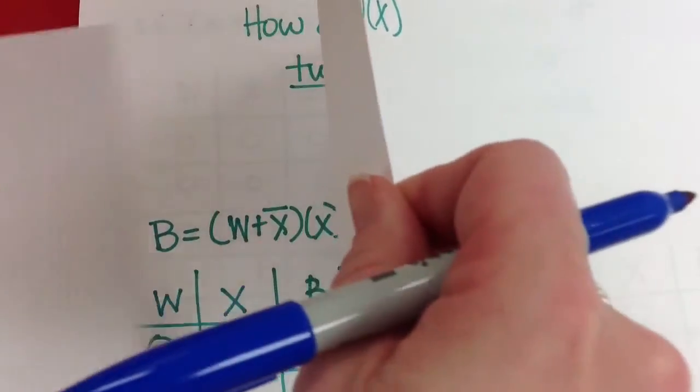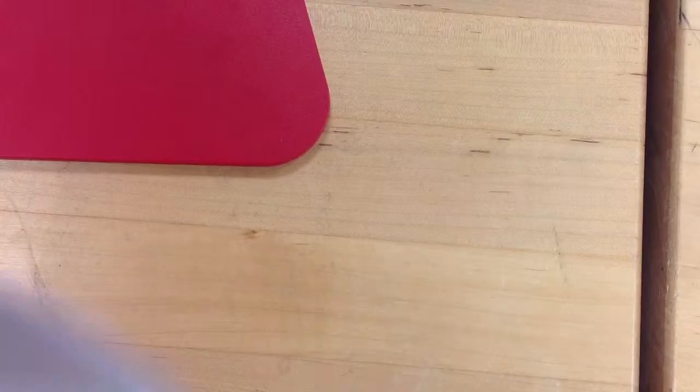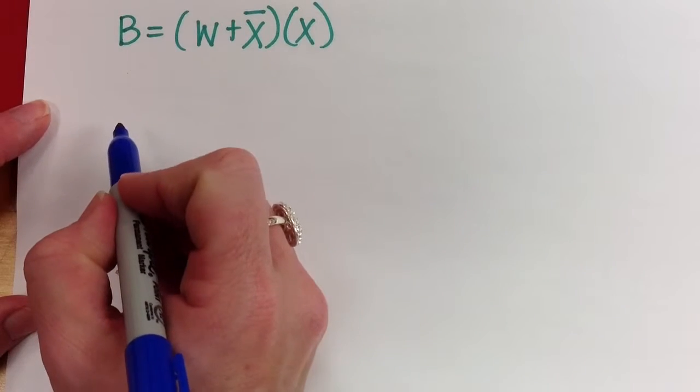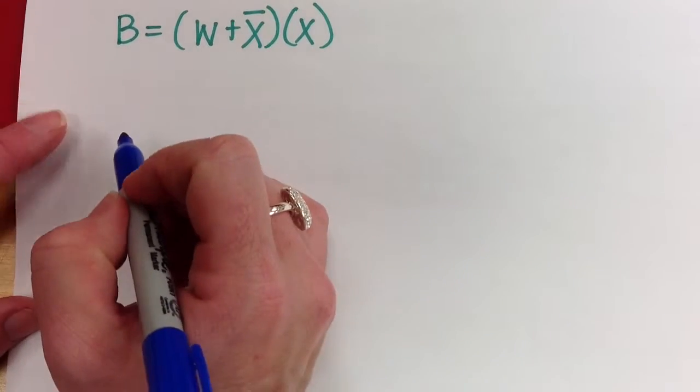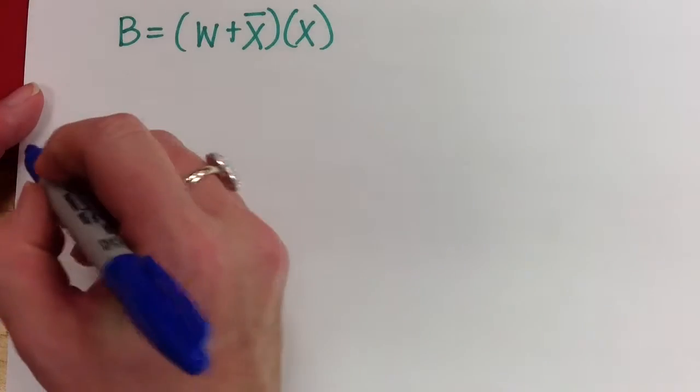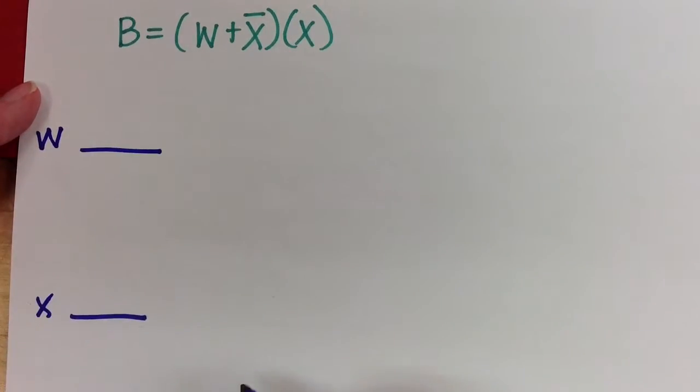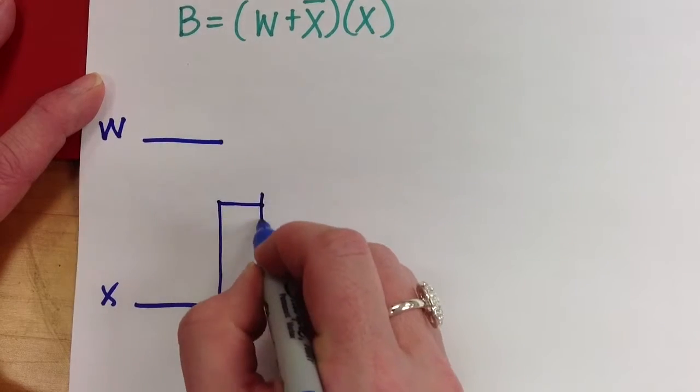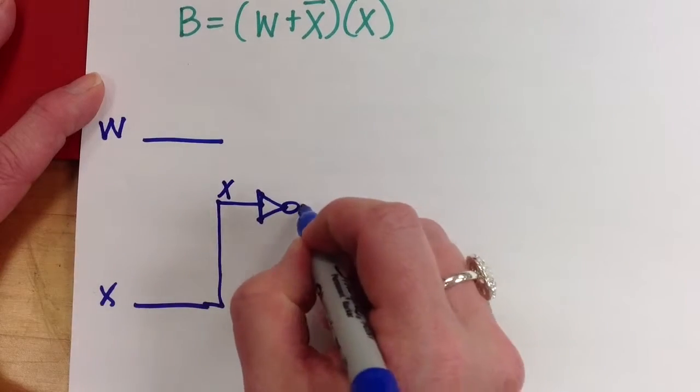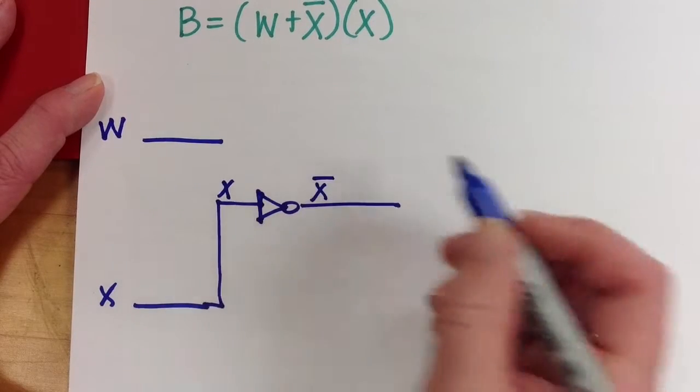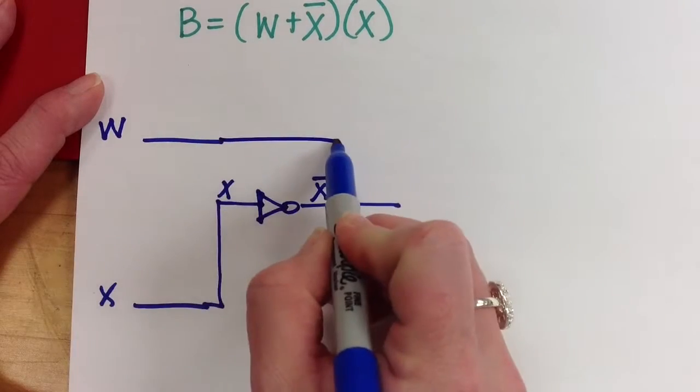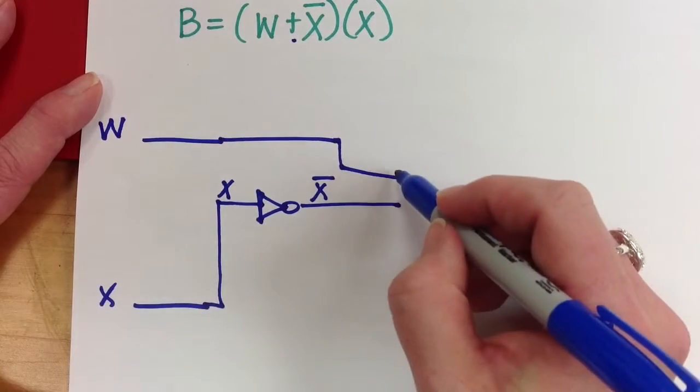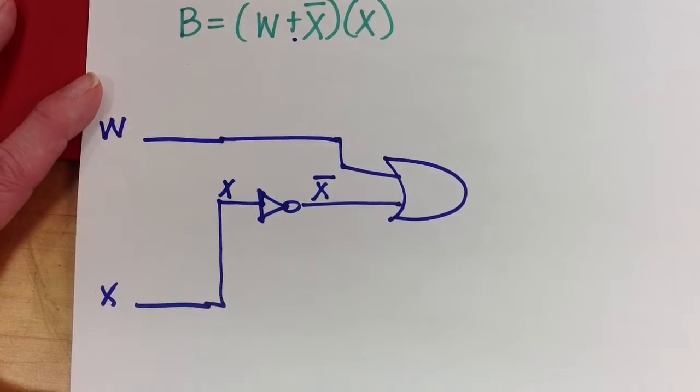So let's sketch that circuit now. And we have this. All right. So we're going to have W and X. And my first term is W or not X. So let's go up here. I'm going to make not X. And here I've made W.